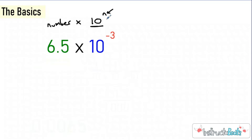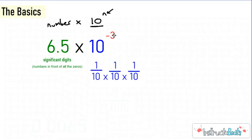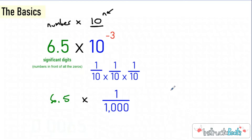Let's understand what's really happening. Here we have 6.5 — those are our significant digits, which are the numbers in front of all the zeros — and we're going to be multiplying that by 10 to the negative third power, which is really three copies of 1 tenth times 1 tenth times 1 tenth. If you do 1 tenth times 1 tenth times 1 tenth, we really have 1 one-thousandth. So really what this is saying is 6.5 times 1 one-thousandth.